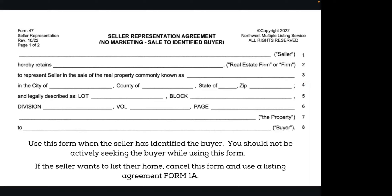The first part you need is the basics of the home being sold. We are going to use this portion to identify the seller who has a buyer already. You should not be the one actively seeking the buyer if you're using this form. If the seller wants to list their home, you can cancel this form and use a standard listing agreement, Form 1A. When you fill this out, fill it out as if you are taking a listing — find out as much information as you possibly can, and also make sure you order a legal description from title.